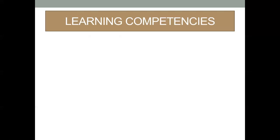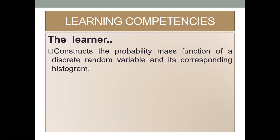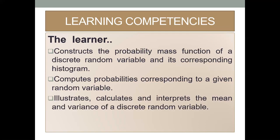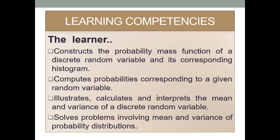Before that, let's know the learning competencies. The learner must construct the probability mass function of a discrete random variable and its corresponding histogram. Next, compute probabilities corresponding to a given random variable. Third, illustrate, calculate, and interpret the mean and variance of a discrete random variable. Lastly, solve problems involving mean and variance of Probability Distribution.